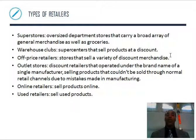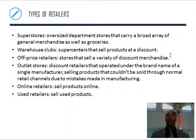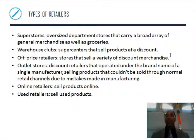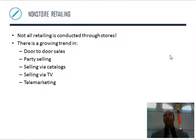More types of retailers. Superstores are oversized department stores carrying a broad array of general merchandise as well as groceries. Warehouse clubs — super centers that sell products at a discount, like Costco and Sam's Club. Off-price retailers sell a variety of discount merchandise. Outlet stores are discount retailers operating under a brand name, selling products that couldn't be sold through normal retail channels due to manufacturing mistakes — sell it at the outlet instead of the Nike store. Online retailers sell products through e-commerce. Used retailers sell used products — like Play It Again Sports, where people bring in treadmills and kettlebells they no longer want, and honestly it's just as good as buying it brand new.